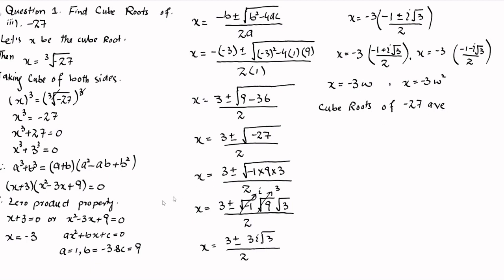So the three cube roots of minus 27 are: x is equal to minus 3, x is equal to minus 3 omega, and x is equal to minus 3 omega squared.